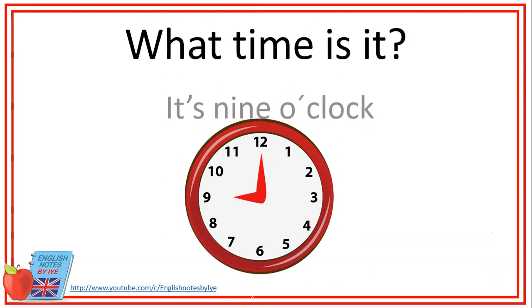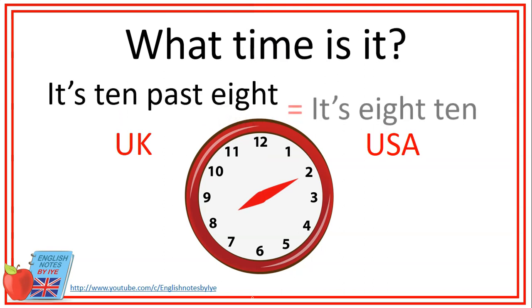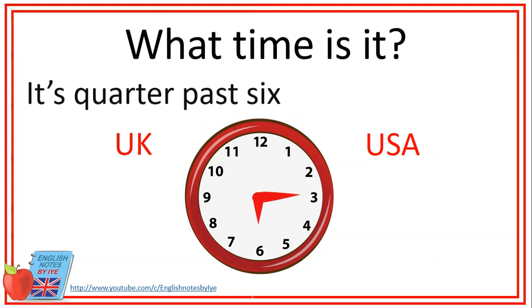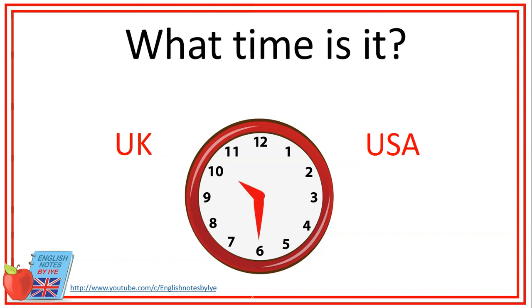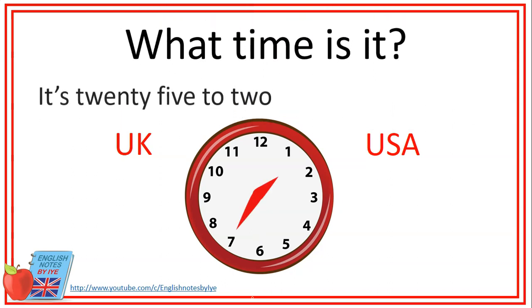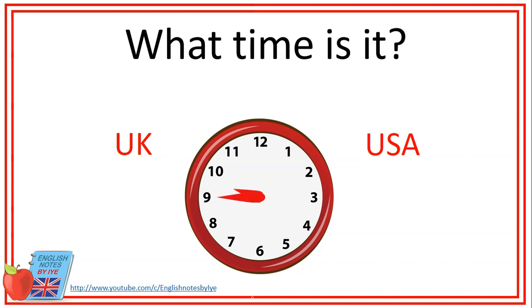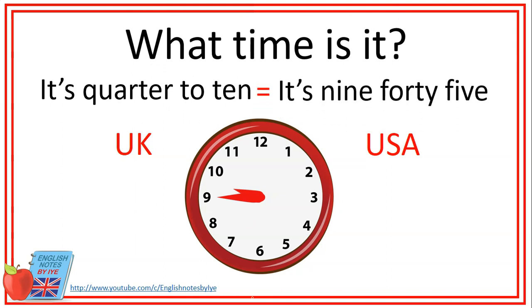What time is it? It's nine o'clock. — What time is it? It's ten past eight. It's eight ten. — What time is it? It's quarter past six. It's six fifteen. — What time is it? It's half past ten. It's ten thirty. — What time is it? It's twenty-five to two. It's one thirty-five. — What time is it? It's quarter to ten. It's nine forty-five.